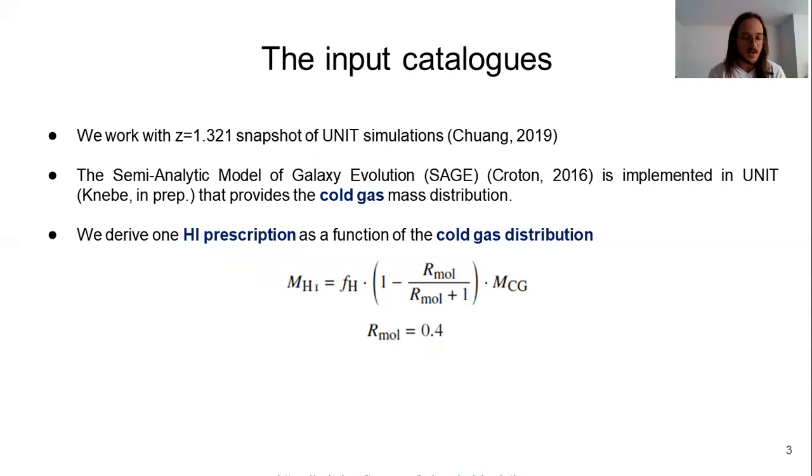a semi-analytic model of galaxy evolution that assembles galaxies from halos, using its merger history and its mass-accretion history. One of the parameters provided by SAGE, among others, is the cold gas.